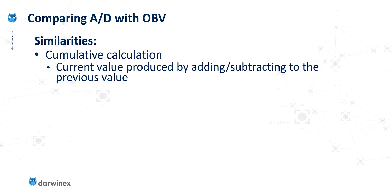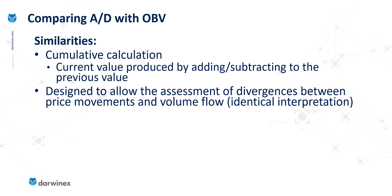It's worth mentioning what the similarities and differences are between AD and OBV. In terms of similarities, they're both based on a cumulative calculation, meaning that each value of the indicator uses the previous value as its starting point and then either adds or subtracts a value to get the new value. A second similarity is that they're both designed specifically to allow the assessment of divergences between price movements and the volume flow.